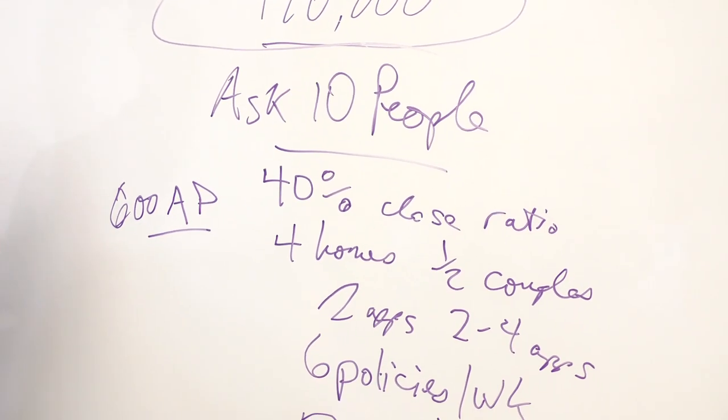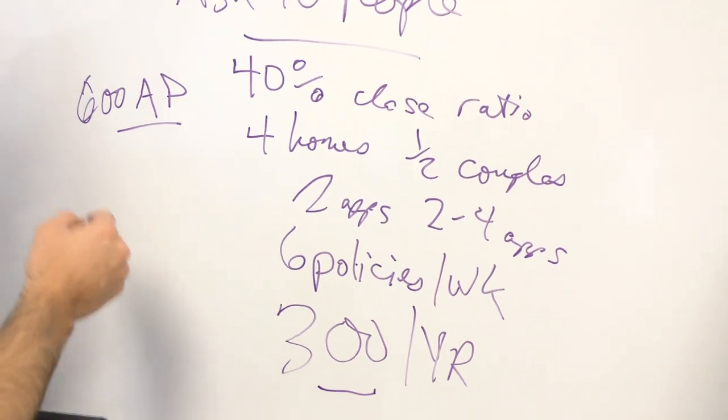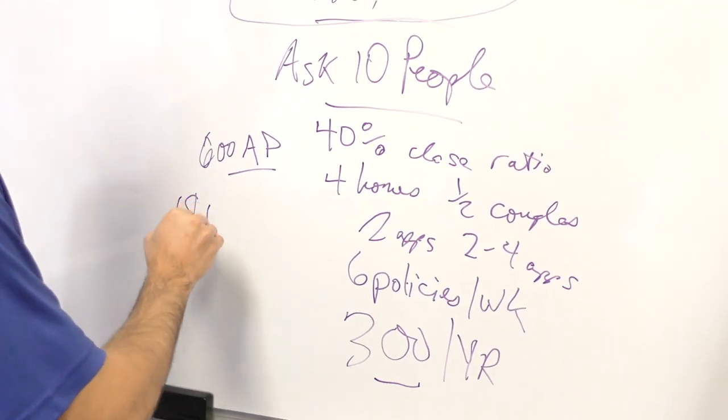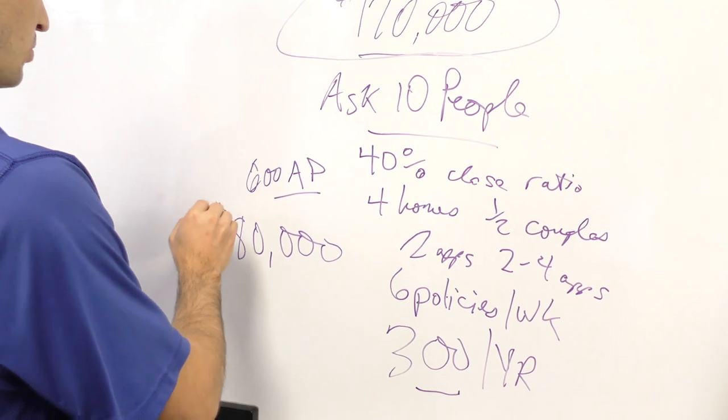If I sell 300 policies times $600, dude, I'm at $180,000 of annual premium.